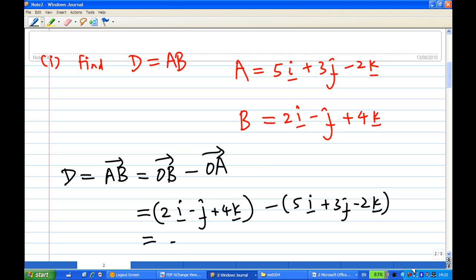You end up with: 2 minus 5 gives minus 3i, minus j minus 3j gives minus 4j, and 4k plus 2k gives 6k. So this is the vector D, the displacement from A to B.